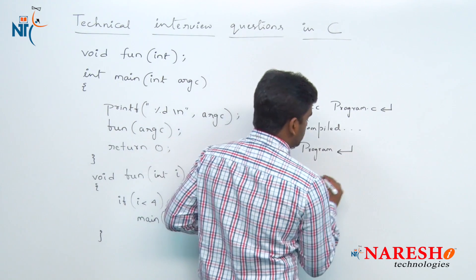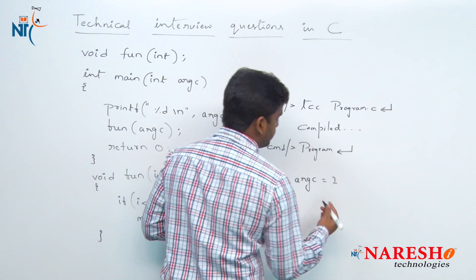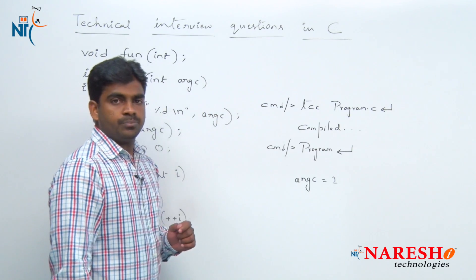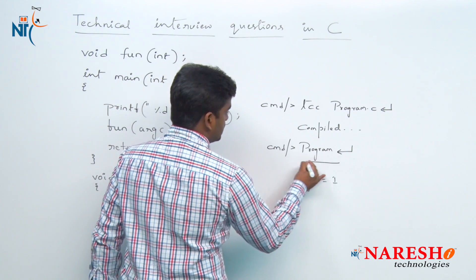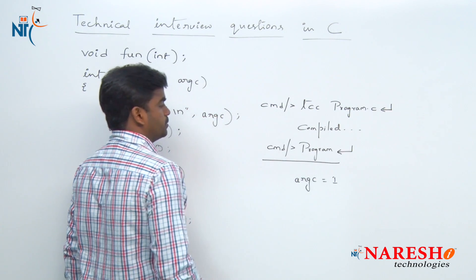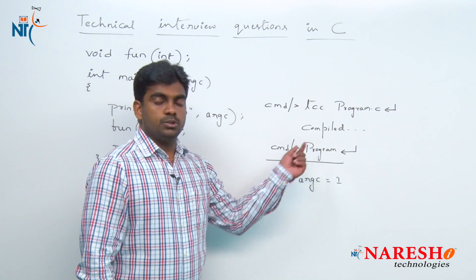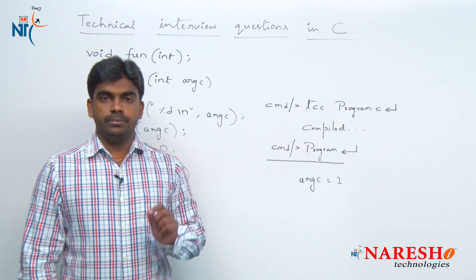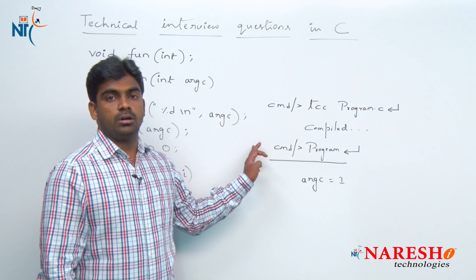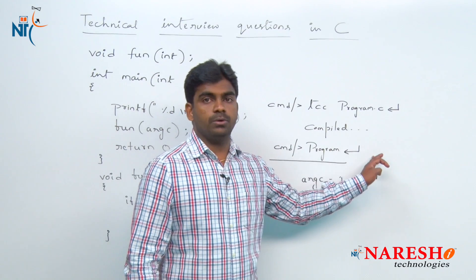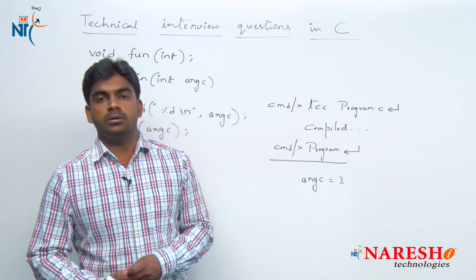Even if you are not passing any arguments, the argument count is still 1. This is very very important. Where is that one argument? The program name itself is considered as one argument in C language — this is the first argument. So though we are not passing arguments, the first argument is the program name, and then the remaining arguments — argument 1, argument 2, argument 3 — are there after it.